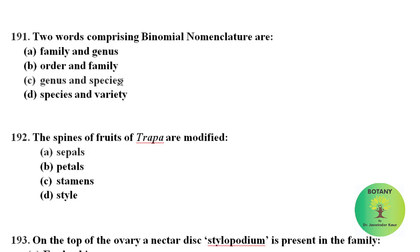In binomial nomenclature, the first word represents Genus and the second word represents Species. This is the correct answer.